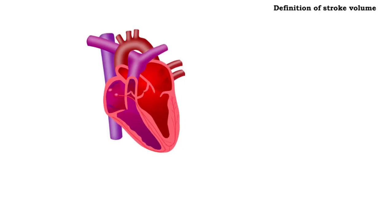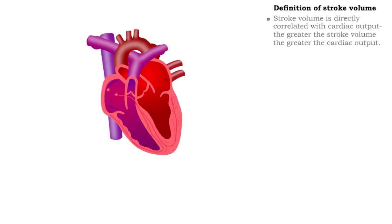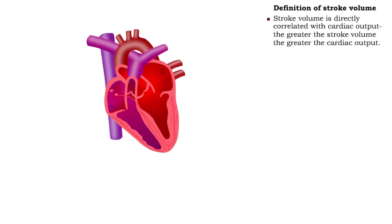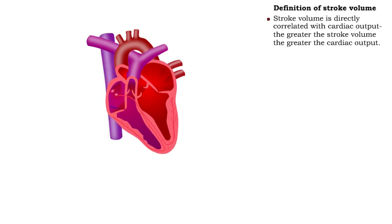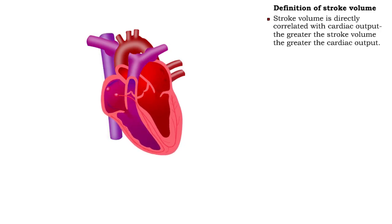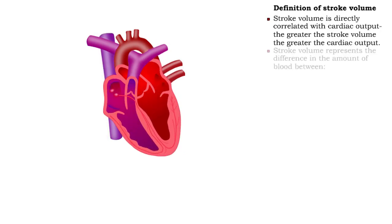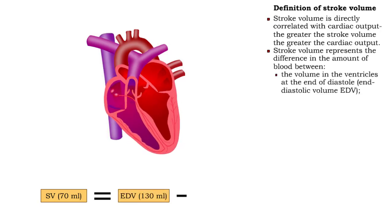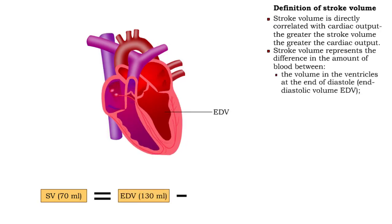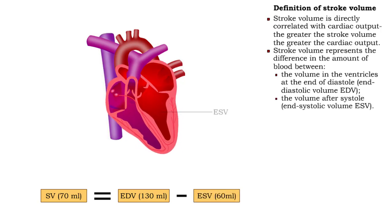Stroke volume is directly correlated with cardiac output. The greater the stroke volume, the greater the cardiac output. Stroke volume represents the difference in the amount of blood between the volume in the ventricles at the end of diastole and the volume after systole.